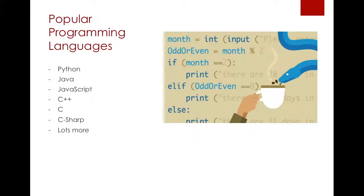So what are some popular programming languages? There's Python — Python is a very simple language because you don't have those squiggly braces like in Java. Python automatically does it for you. It's very high level, meaning it's something easy for people to understand. There's Java, which is a good step as well. If you've taken Java before, then Python should be easier for you.